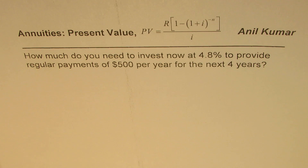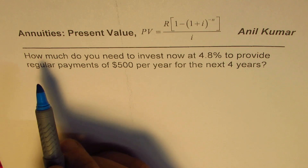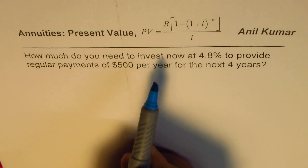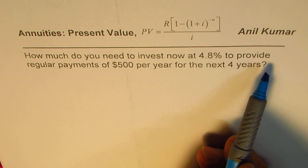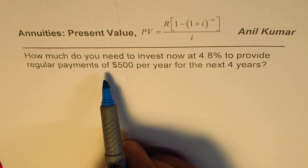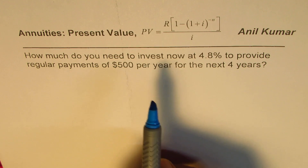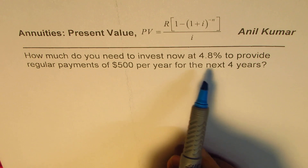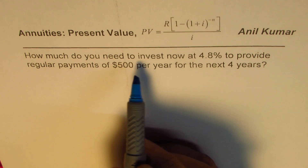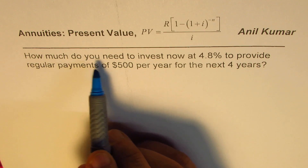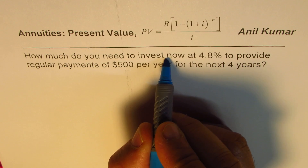I'm Anil Kumar and in this video we'll understand the basic concepts of annuities present value. The question here is: how much do you need to invest now at 4.8 percent to provide regular payments of $500 per year for the next four years? When we are talking about how much do we need to invest now, we are interested in present value.